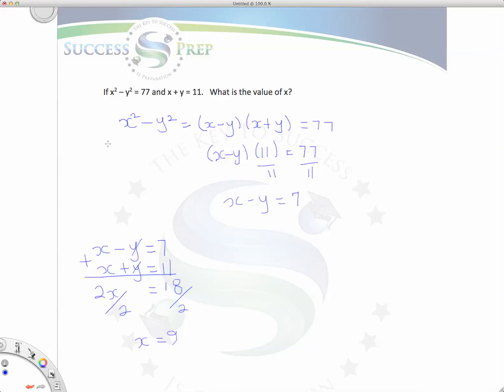The key to solving a question like this is to understand that when you see x squared minus y squared, it's the difference of two squares. So x squared minus y squared would be equal to the product of x minus y times x plus y.